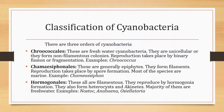The third category is Hormogonales — these are all filamentous. They reproduce by hormogonia formation. They also form heterocysts and akinetes. The majority of them are freshwater. Examples are Nostoc, Anabaena, and Oscillatoria.